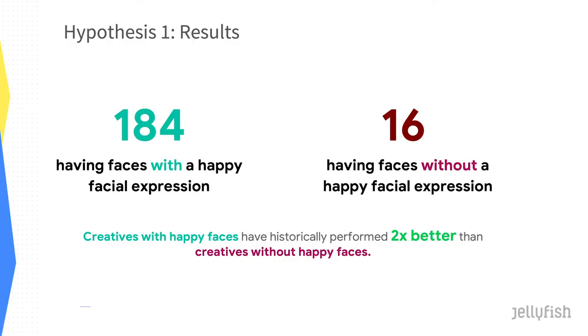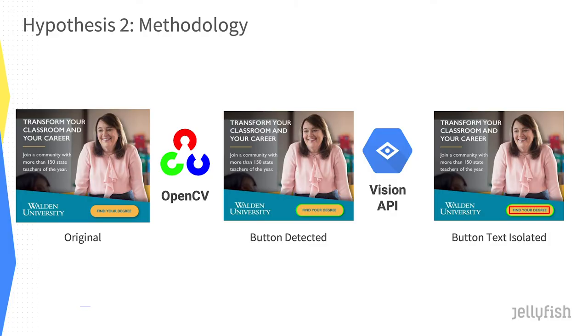Our first hypothesis was that creatives with happy facial expressions perform better than creatives with faces that don't have a happy expression. We had 184 creatives with happy facial expressions and 16 with faces without happy expressions. The results: creatives with happy faces have historically performed two times better than creatives without happy faces. For our second hypothesis, we wanted to measure the effectiveness of call-to-action buttons. We used the OpenCV computer vision library to find the locations of all the buttons in all our creatives with about 90% accuracy, and then cross-referenced that with the Vision API data to figure out the context of the call to action — what words were inside or outside the button.